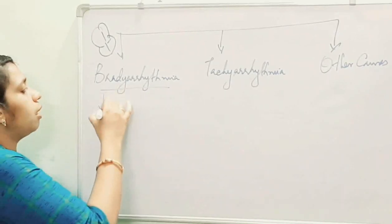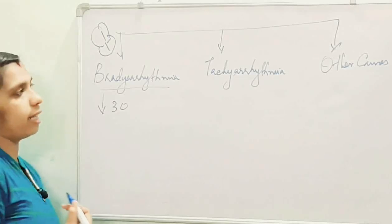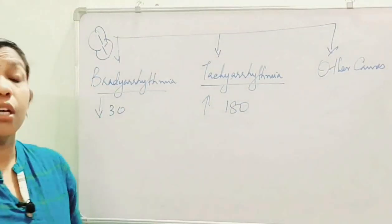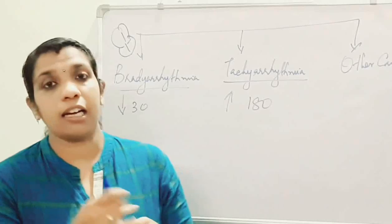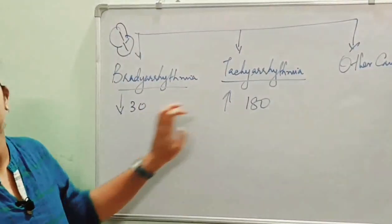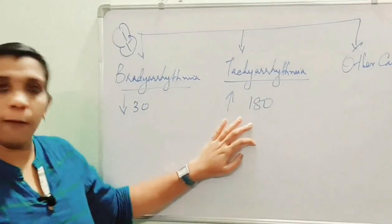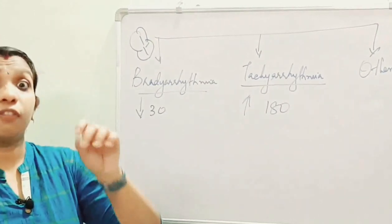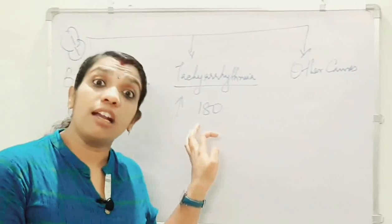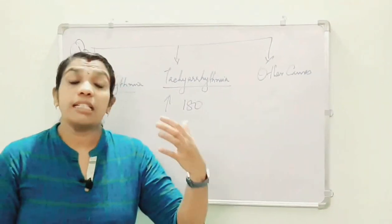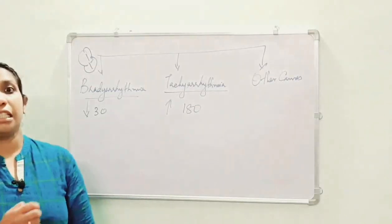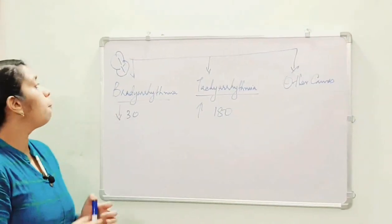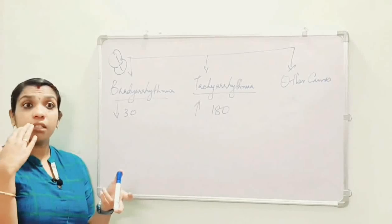In bradyarrhythmia, the heart rate is reduced to less than 30. In tachyarrhythmia, the heart rate is more than 190. For a normal person, if the heart rate ranges between 30 and 190, cerebral perfusion will be normal and there is no chance of syncope. But if the heart rate is less than 30 or more than 190, there is a change in stroke volume leading to reduced cerebral blood flow and syncope.